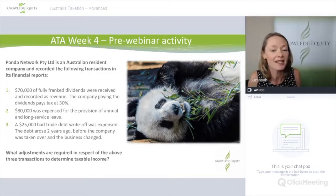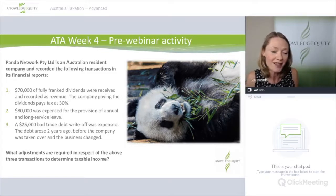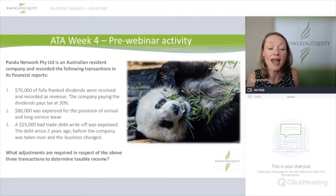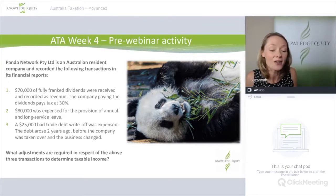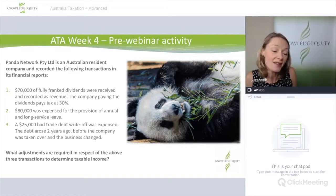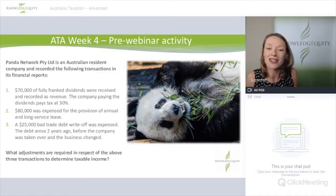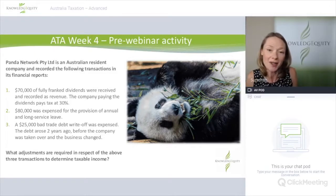Let's look at our pre-webinar activity. Panda Network Pty Limited is an Australian resident company recording the following transactions: $70,000 of fully franked dividends received, where the company paying the dividends pays tax at 30%; $80,000 expensed for the provision of annual and long service leave for employees; and a $25,000 bad trade debt write-off, where the debt arose two years ago before the company was taken over and the business changed. You were asked what adjustments are required to determine taxable income.